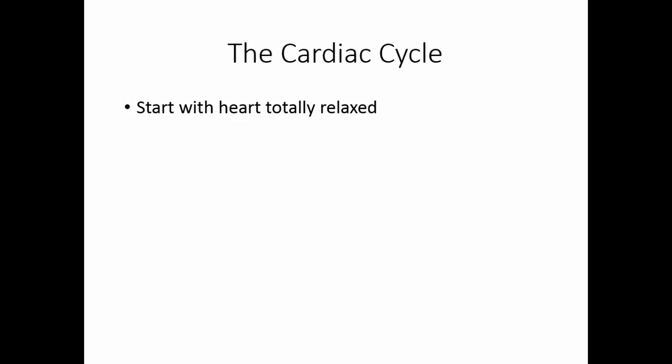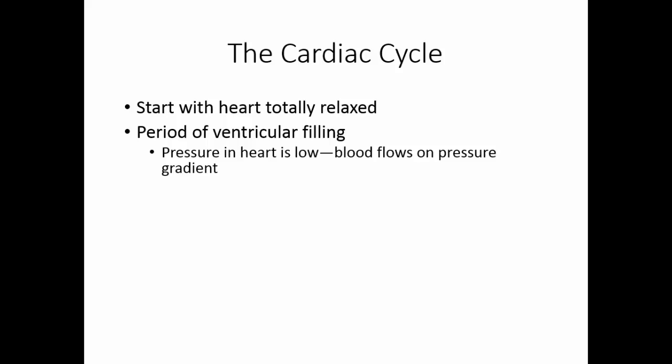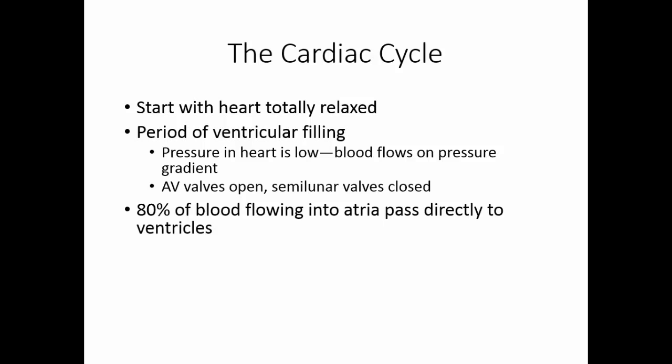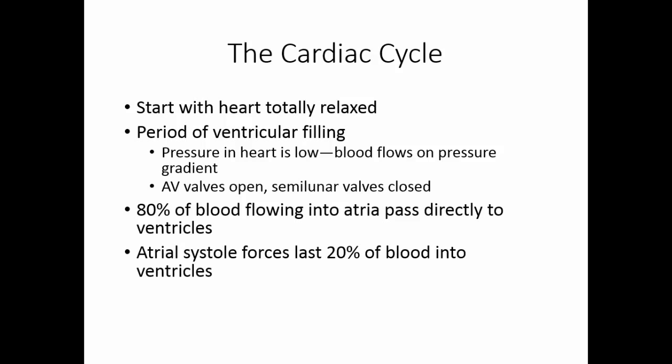Looking at the cardiac cycle in more detail, we start with the heart totally relaxed — the period of ventricular filling. When the heart is totally relaxed, it is the lowest pressure point in the circulatory system. Blood flows along a pressure gradient from high to low pressure, so there's a natural pull of blood into the heart. The AV valves are open but the semilunar valves are closed. About 80% of the blood flows from the atria right through those open AV valves directly into the ventricles. At atrial systole, when the atria contract, the other 20% is forced into the ventricles.